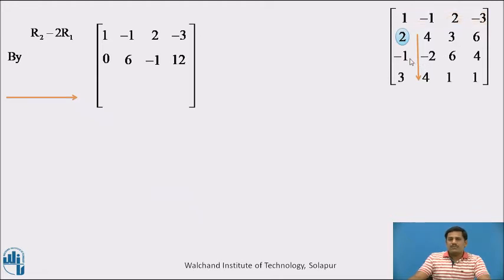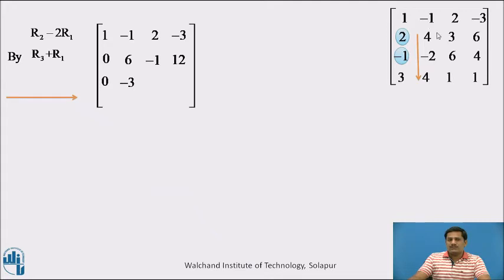The next entry is minus 1. It is very simple to reduce it to 0 — we simply add row number 3 and row number 1. Obviously the first entry is 0, the second entry minus 2 plus minus 1 is minus 3, 6 plus 2 is 8, and 4 plus minus 3 is 1.